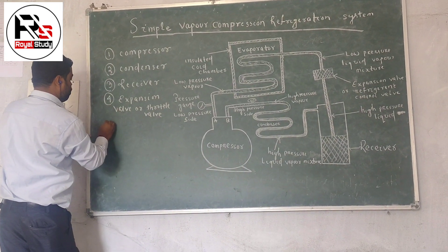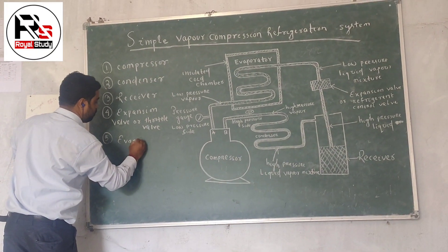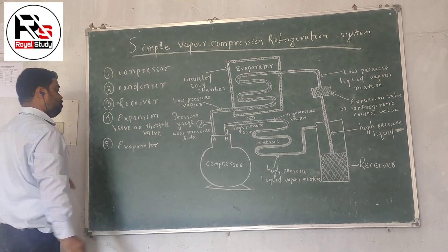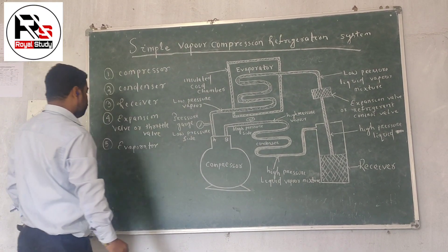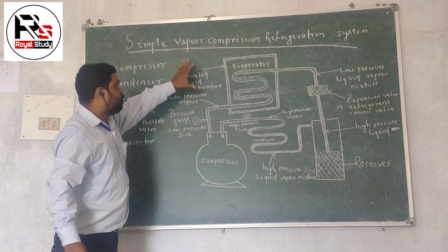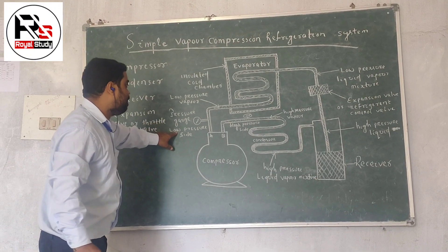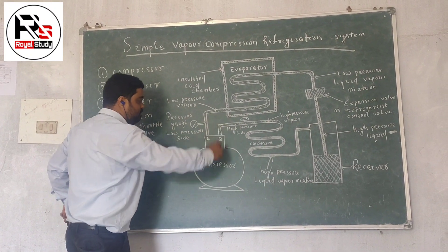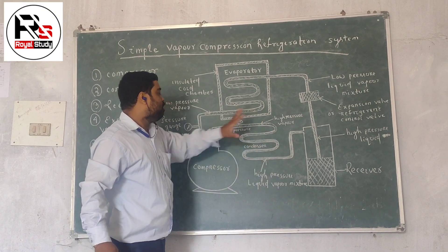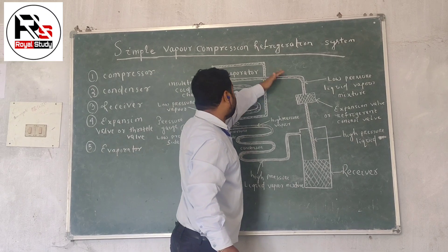The last component is your evaporator. So, the principle of the vapor compression refrigeration system works with two sides: one is the low pressure side and the other is the high pressure side. The high pressure side goes from the compressor to the condenser, and the low pressure side goes to the refrigerator.